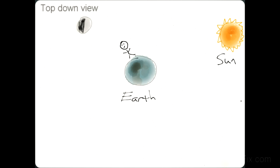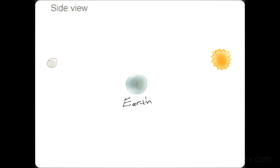When you're a person on Earth looking at the moon when it's in one part of its revolution, the phase is going to look different from when the moon is in another part of its revolution. Now let's take a look at an important side view. The Earth's orbit and the moon's orbit are slightly tilted so that the moon, the Earth, and the sun are not at the same plane.